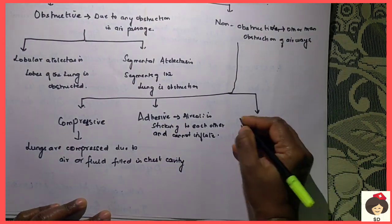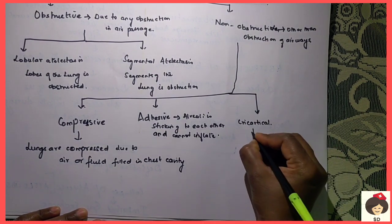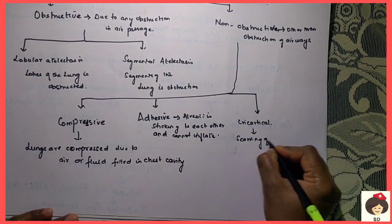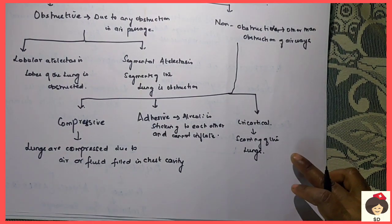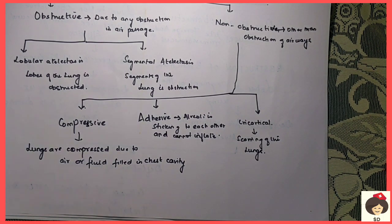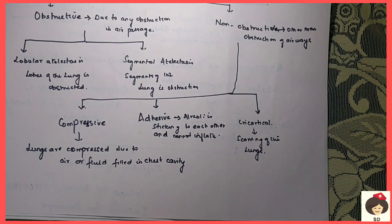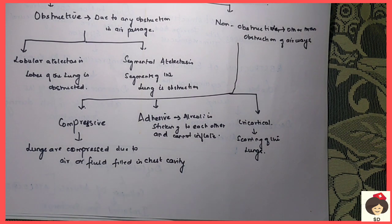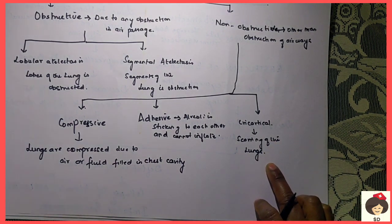The next type is cicatricial Atelectasis, which is due to any scarring of the lungs. As I mentioned in the previous Empyema class, after any infection in the lungs, infection can go into the pleural cavity; after formation of pus, fibrin is produced and results in scarring. This scar tissue will become hard and tighten on the pleural membrane, making the pleural cavity and lung membrane very stiff. The air cannot enter the alveoli because of the stiffening of the lungs — we call this cicatricial Atelectasis.